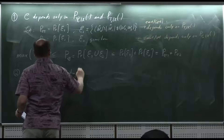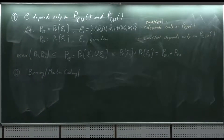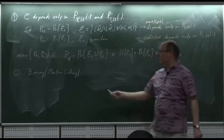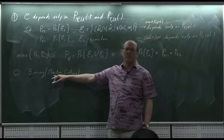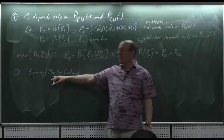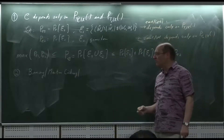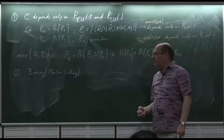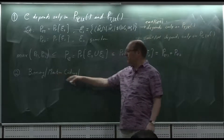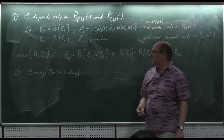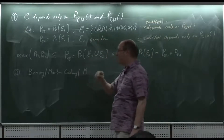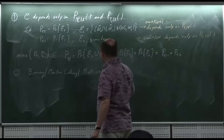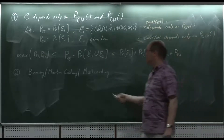The method first appeared in Marton's 1978 paper and is sometimes called multi-coding in the Cover-El Gamal-Kim book. The code construction mirrors what we did for Slepian-Wolf coding: we have code words X^n(W1, V1) and Y^n(W2, V2), with bins indexed by W1 and W2 respectively.